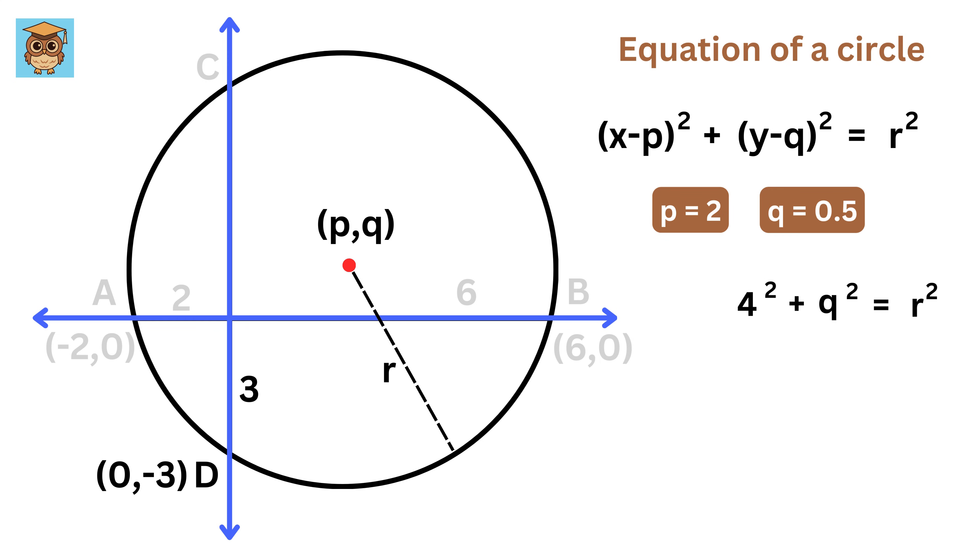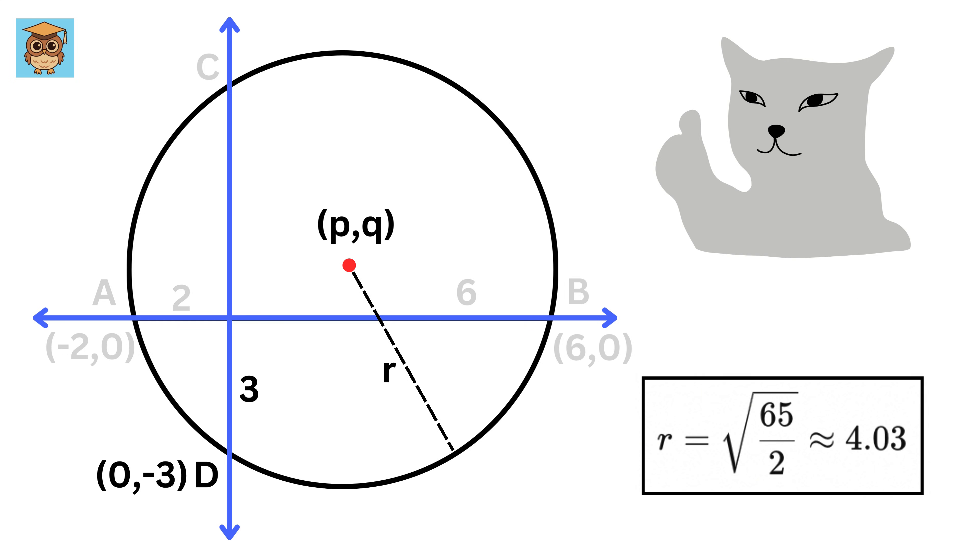Finally, with p equals 2 and q equals 0.5, we put these into the original formula, and after some quick math, we find the radius: r equals the square root of 65 divided by 2, which is about 4.03.